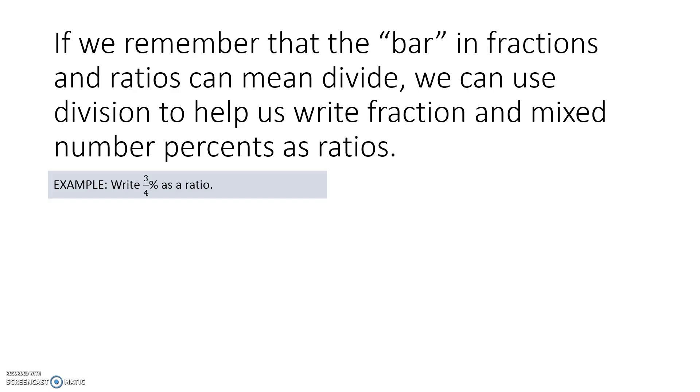Write 3/4 percent as a ratio. Remember that it would start by writing it over 100. But 3/4 over 100 is really the same thing as 3/4 divided by 100 or 100 over 1. If we apply KFC to that we get 3/4 times 1/100. There's no cross cancellation to do so we get 3 to 400 as the ratio for 3/4 percent.